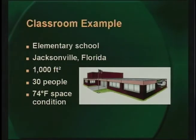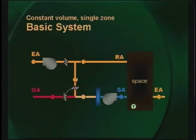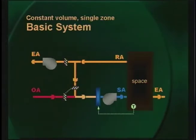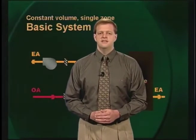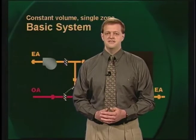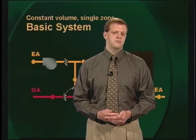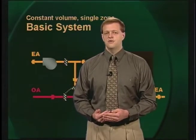This 1,000 square foot classroom contains 30 people and is designed to maintain a space condition of 74 degree dry bulb. Here's a schematic of the basic single zone constant volume system that serves this space. The thermostat senses the dry bulb temperature in the space and compares it to a set point. The capacity of the cooling coil is modulated to adjust the supply air temperature until the sensible capacity of the coil matches the sensible load in the space, maintaining space dry bulb temperature at the set point. A colder coil surface results in more moisture condensing on the coil and, in turn, a higher coil latent capacity.